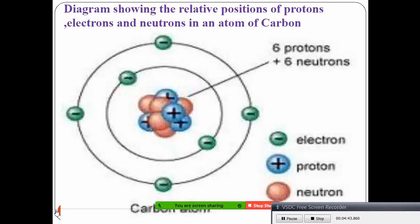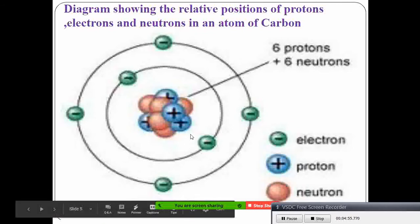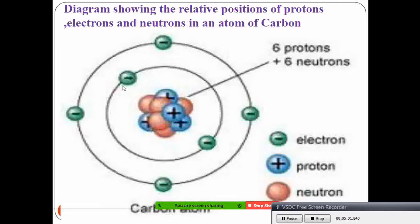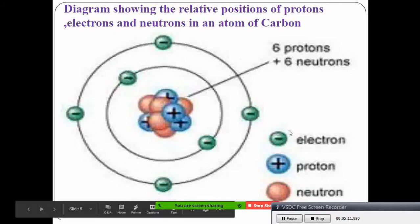Using the example of carbon: it has six protons at the center and six neutrons. Remember, the neutrons also occupy the center. The electrons surround the nucleus, which contains the positively charged particles. Neutrons have no charge, protons are positively charged, and electrons are negatively charged.